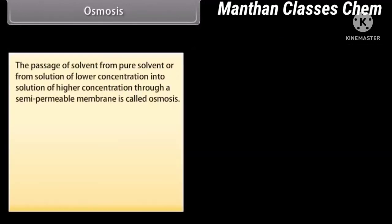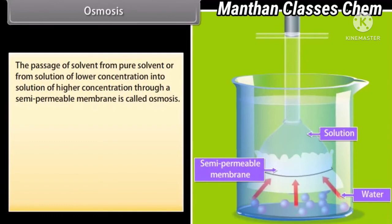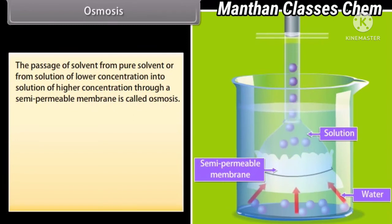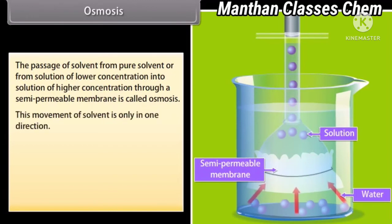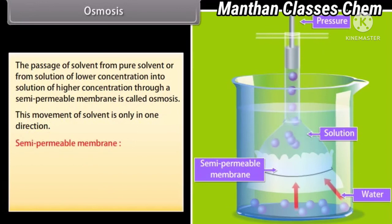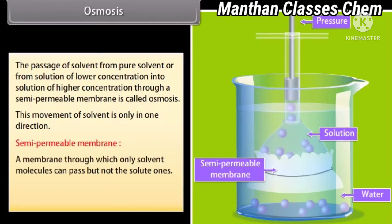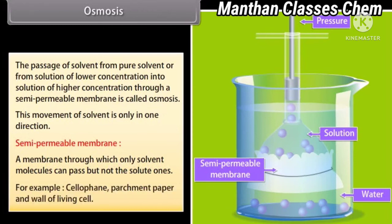Osmosis: The passage of solvent from pure solvent or from a solution of lower concentration into a solution of higher concentration through a semi-permeable membrane is called osmosis. This movement of solvent is only in one direction. A semi-permeable membrane is a membrane through which only solvent molecules can pass but not solute ones. Examples include cellophane, parchment paper, and the wall of living cells.